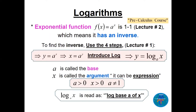We know from lecture two that the exponential function f(x) = a^x is one-to-one, which means it has an inverse. To find the inverse, we use the four steps from lecture one. The first step is to replace f(x) by y, so we write y = a^x.